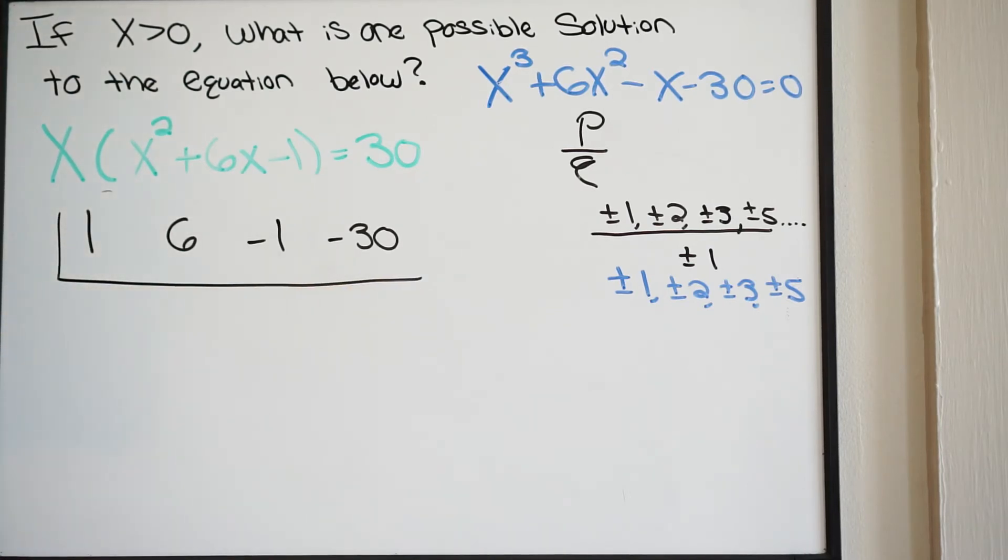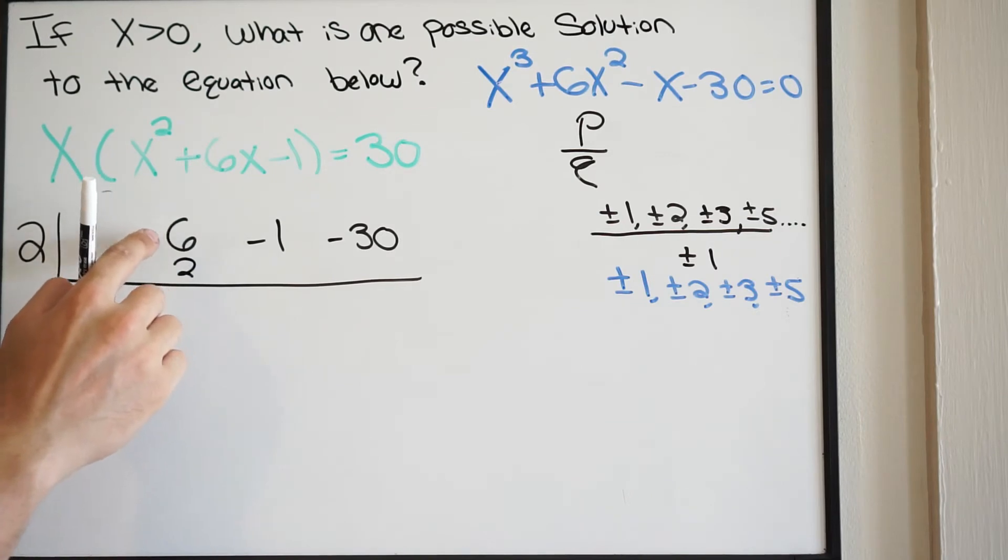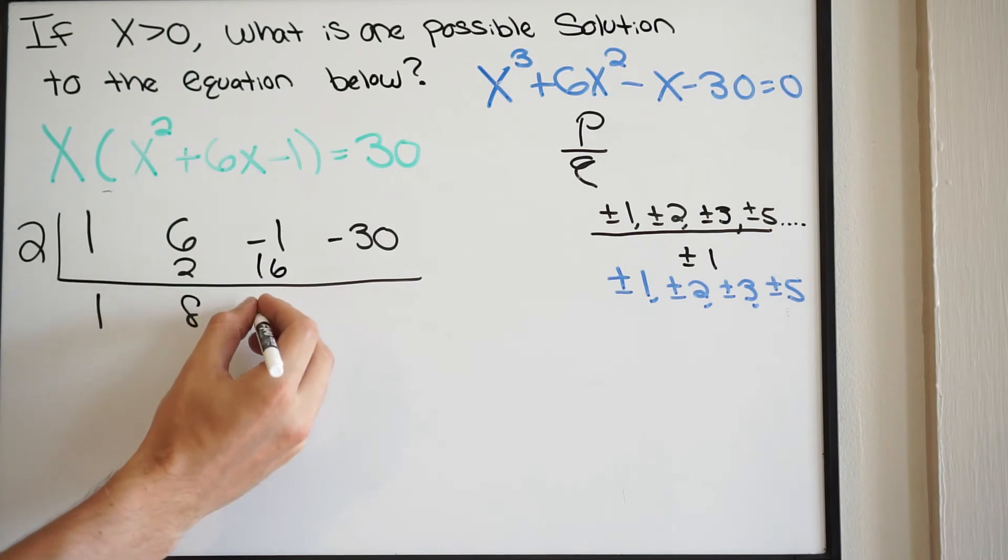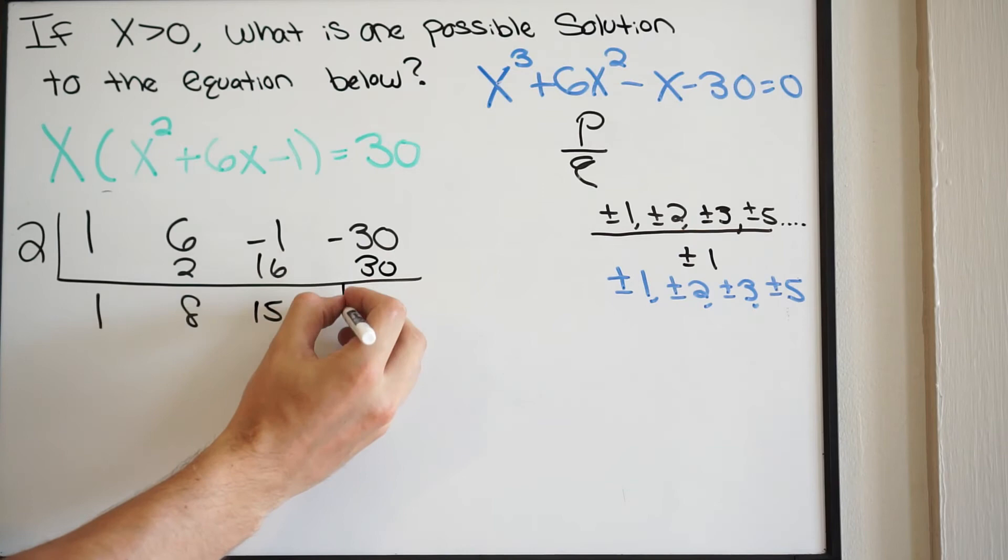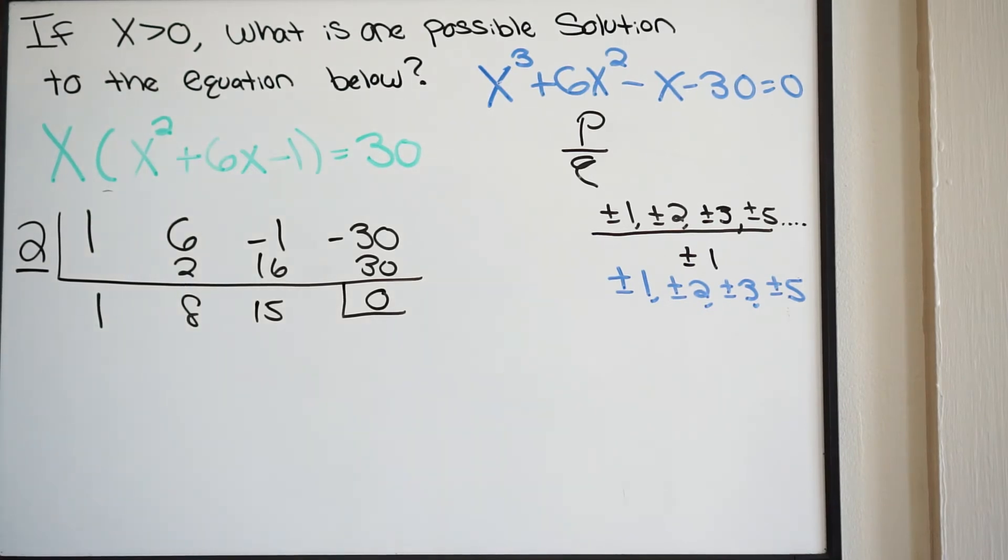Let's go ahead and test this out. In this case, we'll just go ahead and pick positive 2. We're going to bring down the 1. 2 times 1 is 2. 6 plus 2 is 8. 2 times 8 is 16. This is going to give us 15. 2 times 15 is 30. So look what happens here. Our remainder is going to be 0. So this tells us that, yes, 2 is going to be a 0 of this polynomial.